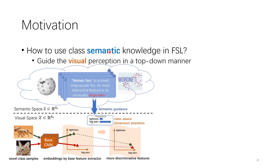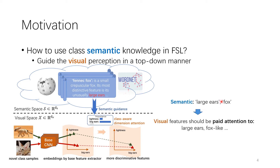Therefore, in this work, we propose to use class-semantic knowledge to guide visual perception in a top-down manner about what visual features should be paid attention to. For example, assuming that our machine has never seen an image of a Phoenix fox before, even learning with only one sample, our model can leverage semantic knowledge — such as having large ears — to guide the model to pay attention to discriminative features like large ears and ignore noisy features like lightness.